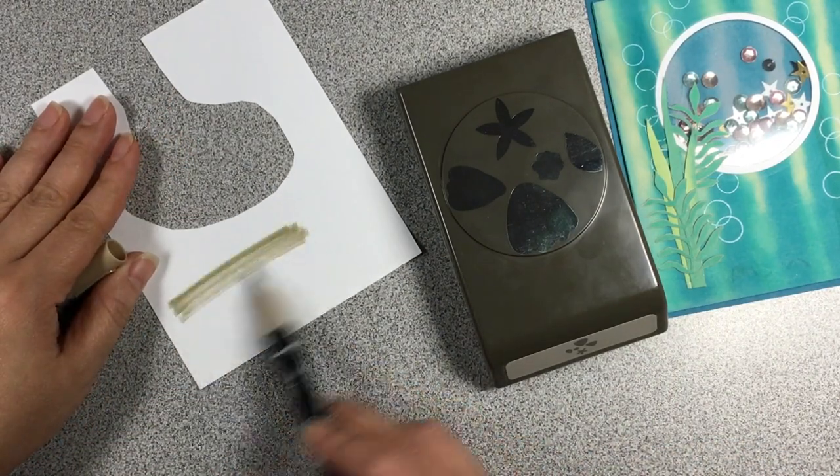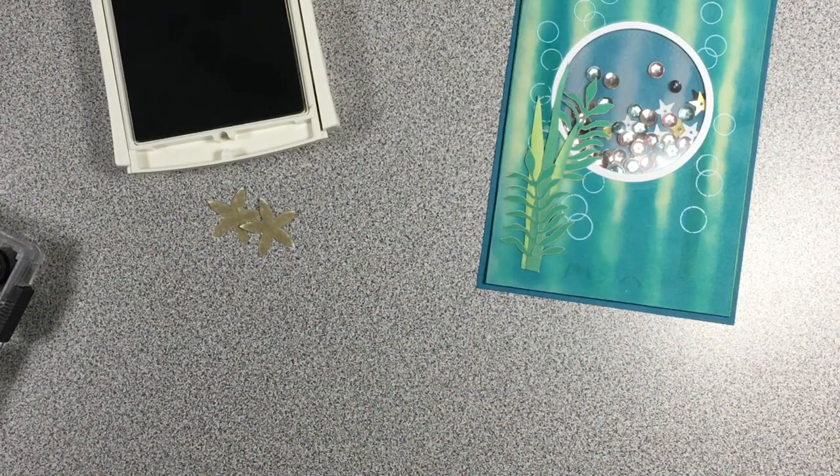Now using the Blossom Builder punch, I really wanted some underwater starfish. And so I just scribbled crumb cake Stampin' Right marker on a white piece of cardstock. And then I punched it out with that punch. And then I also shaded the edges with crumb cake, but I think chocolate chip would have been better. And then I also used early espresso just to intensify the details.